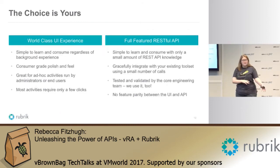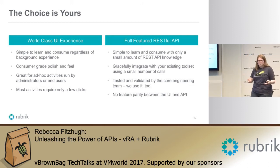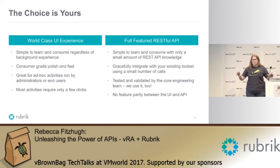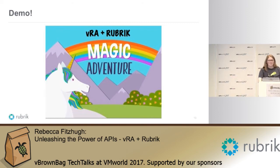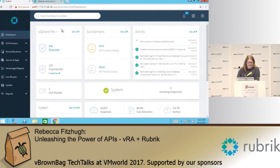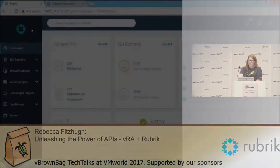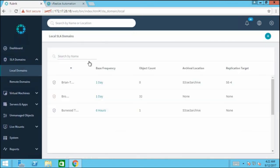Can you use the UI and do everything I'm going to show you? Yes. But if you're already using something like VRA, do it through VRA — it'll take a little bit of time, but it'll make your life a lot easier in the long run. So here's where I'm going to try some magic — let's do a quick demo of what this could look like. This is our UI, and I'm going to show you how I can assign an SLA to an individual virtual machine.